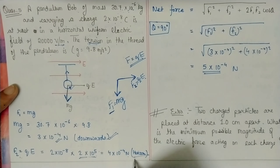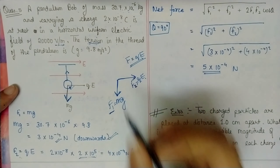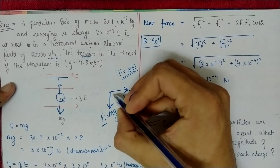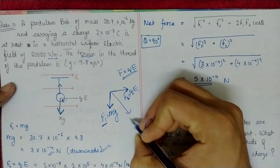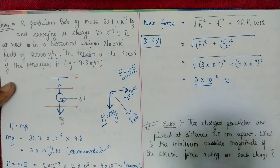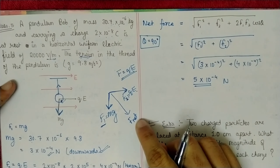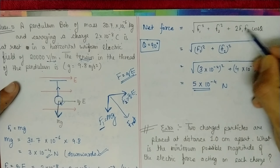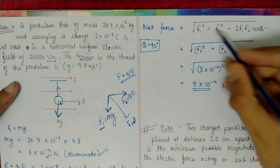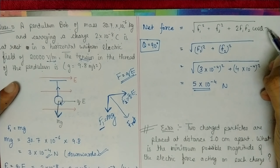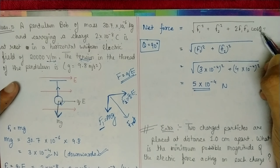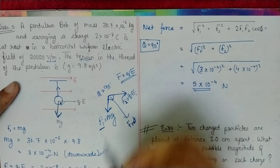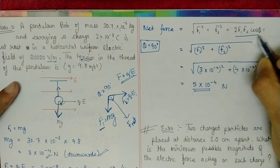F₁ is downward and F₂ is horizontal, so the angle between them is 90°. Using the vector addition formula: √(F₁² + F₂² + 2·F₁·F₂·cos90°). Since cos90° = 0, the last term vanishes, leaving √(F₁² + F₂²).